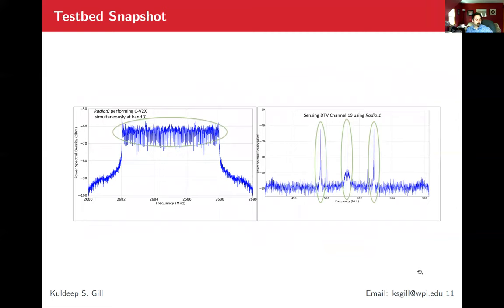This is the actual open interface running plot. We are plotting while we are maintaining the CV2X. On the left side, we have radio zero which is performing CV2X. As we can see, this is how the LTE spectrum mask looks at 2.685 gigahertz. And on the right side, we have our radio one which is performing the sensing at DTV band. They are both occurring at the same time, real time scenario. I'm going to explain both in details in the next slides.